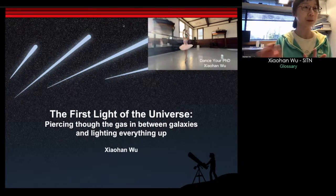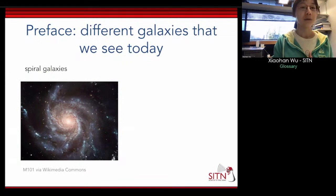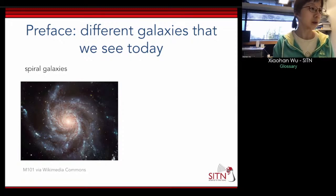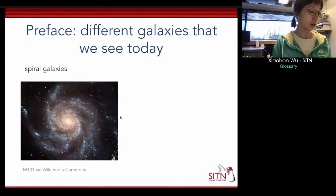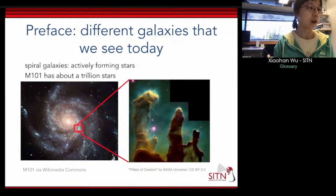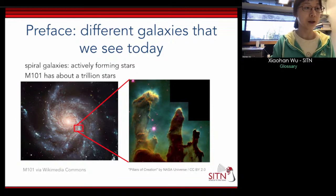Thank you for the introduction. I'm a fifth-year grad student here at Harvard, and today's topic is about the first light of the universe. So first of all, we know that the universe is filled with galaxies. One type of galaxy we're most familiar with is the spiral galaxy, because our own Milky Way is a spiral galaxy — for instance, this is M101. These spiral galaxies are star-forming galaxies, meaning they are actively forming stars.